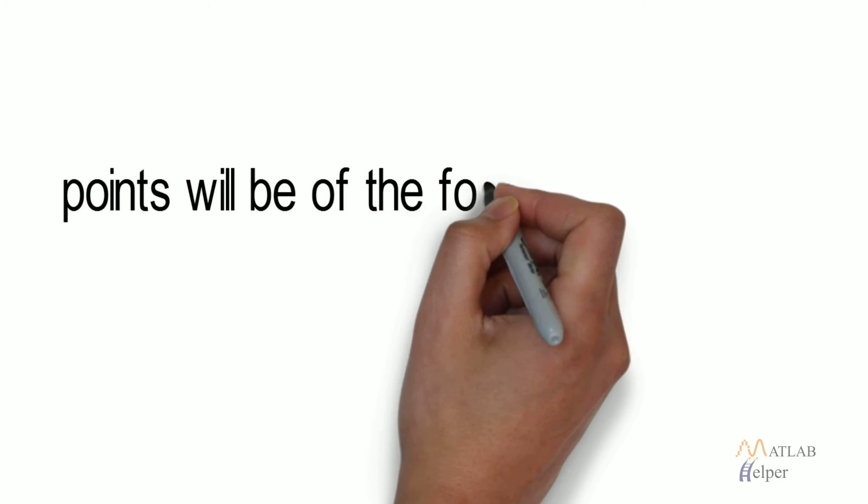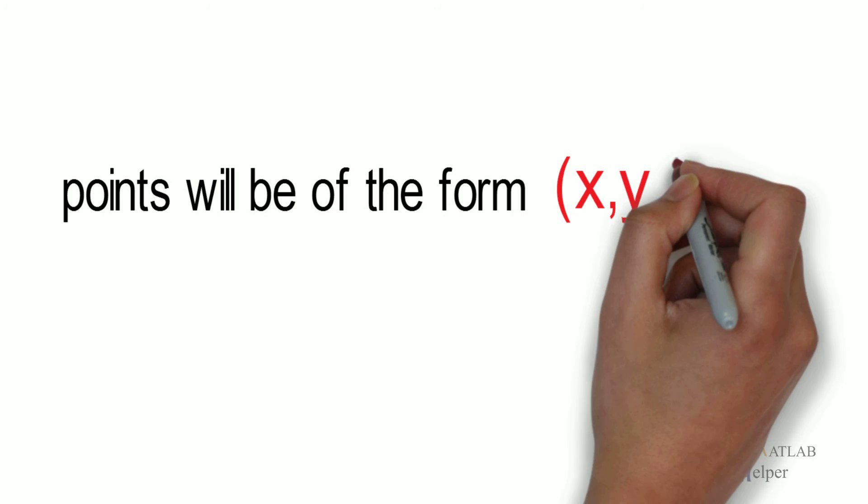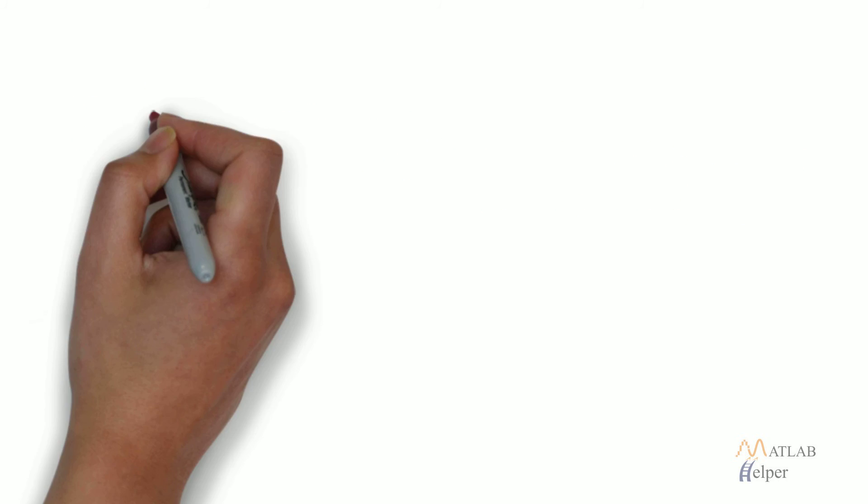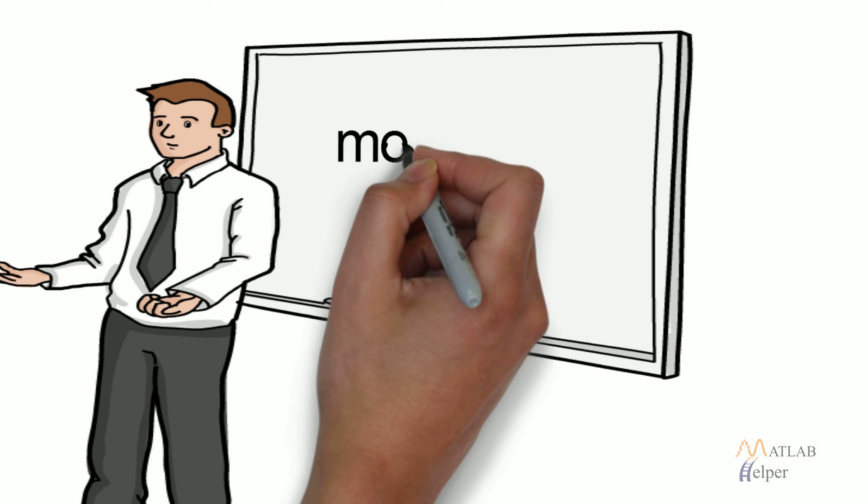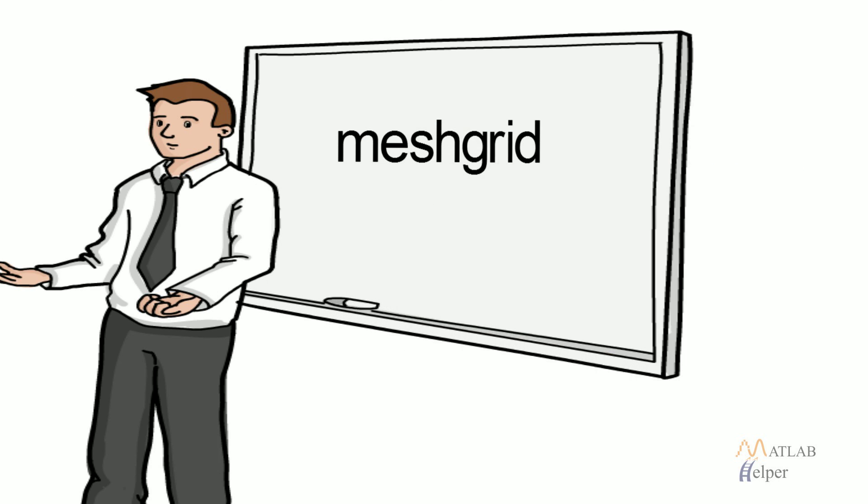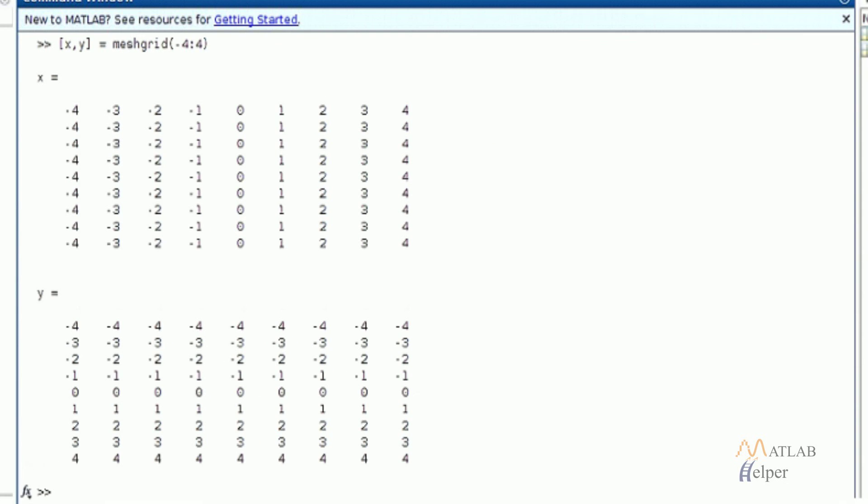Hence, the points will be of the form (x, y) and function of (x, y). In MATLAB, we can use meshgrid function to arrange (x, y) values in the form of a grid. Correct usage of this function is shown in the figure.